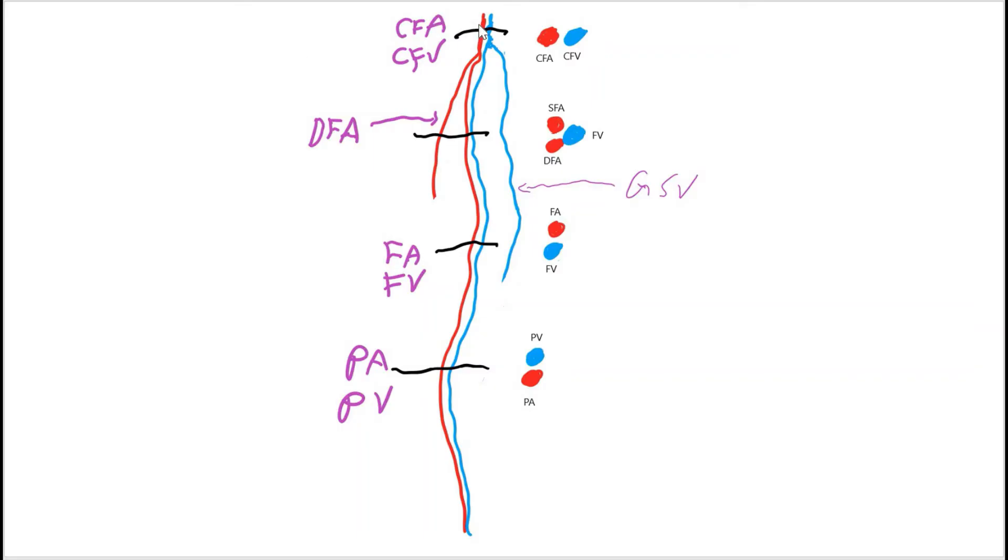Here is a drawing of the lower extremity vasculature. The red are the arteries and the blue are the veins. Starting from the top in the inguinal area we have common femoral artery and common femoral vein. And then the femoral artery bifurcates into a superficial femoral artery and deep femoral artery.